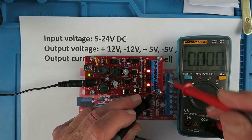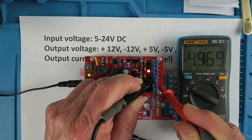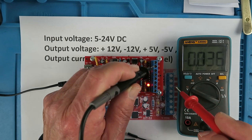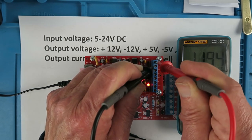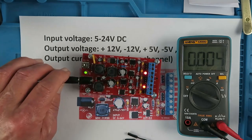So just double check here plus 3.3 minus 5 plus 5. Reading the same minus 12.23 and finally 11.95. So all is good.